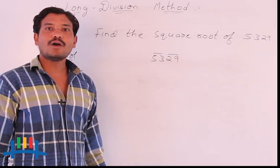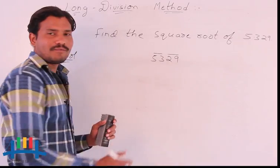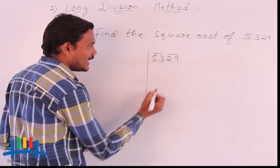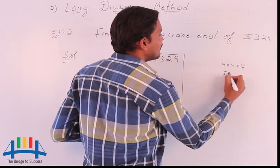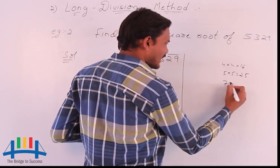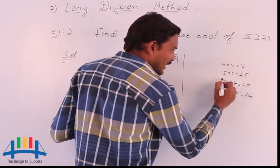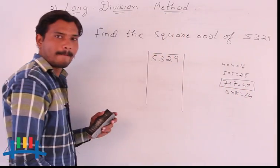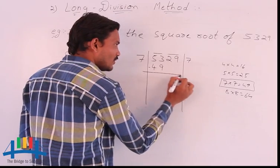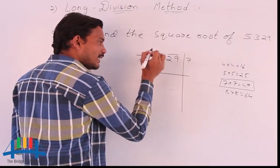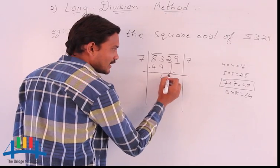Think of the larger number whose square is equal to or just less than the first period. The first period is 53. We know 4 times 4 is 16, 5 times 5 is 25, 7 times 7 is 49, and 8 times 8 is 64. So 7 times 7 equals 49, which is less than 53. We consider 7 times 7, which is 49. Subtracting from 53: borrowing gives 13 minus 9 is 4. Then we bring down the second period 29, making it 429.